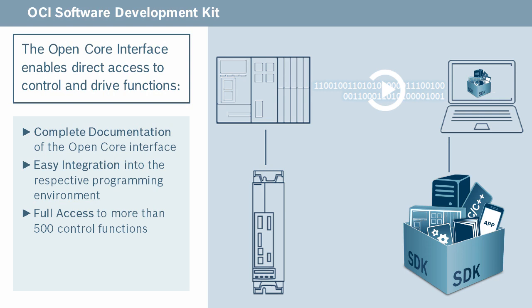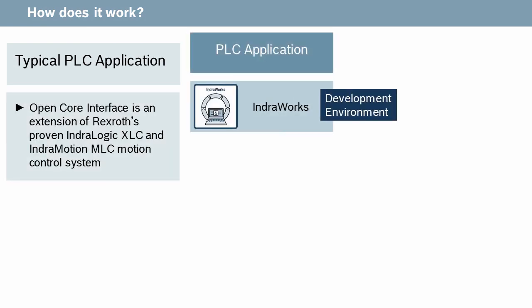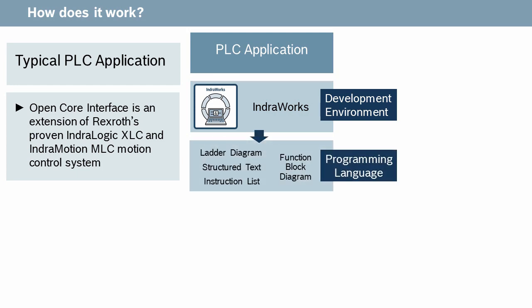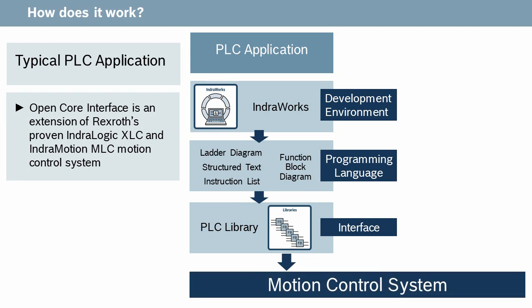It's a library with over 500 different functions to perform motion commands and gather status information about our motion products. The way it works is very similar to the way a PLC application works in the controller. There's a CODESYS 3S system on top of the motion control system. The application engineer writes a PLC program in IndraLogic using Ladder Logic, Structured Text, or another language to access commands in PLC libraries, and then those libraries talk to the firmware — more under the hood — to actually create motion in the system.